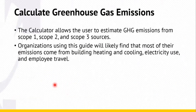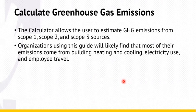To calculate greenhouse gas emissions, the calculator I've been using is an Excel tool from EPA. This calculator allows the user to estimate greenhouse gas emissions from scope one, two, and three. Organizations use this to find their emissions coming from building heating and cooling, electricity use, and employee travel.